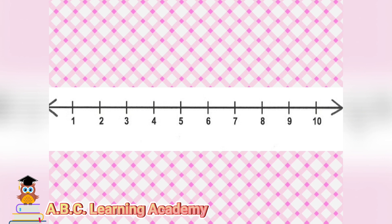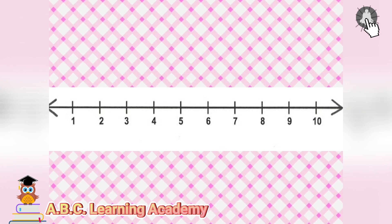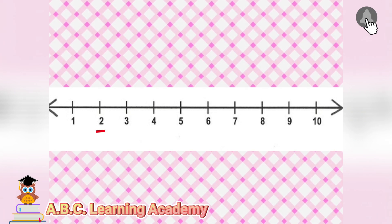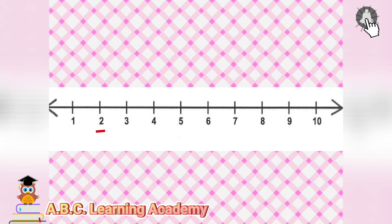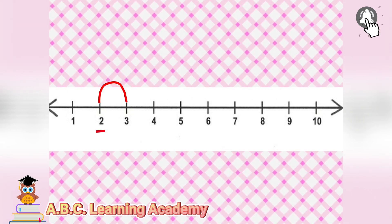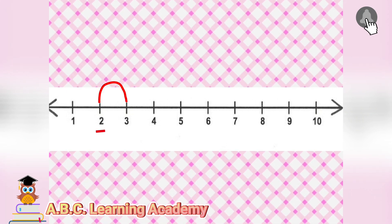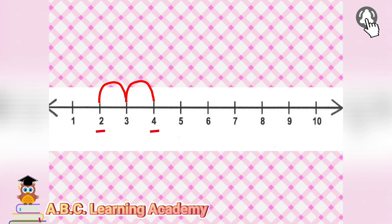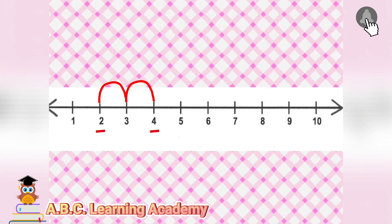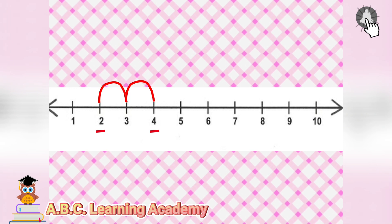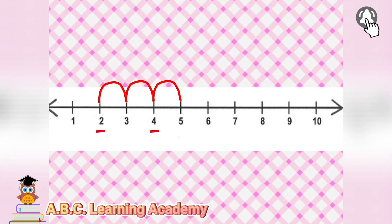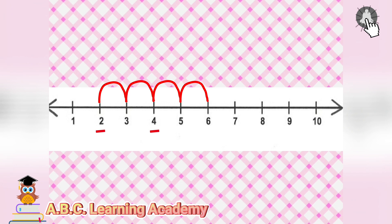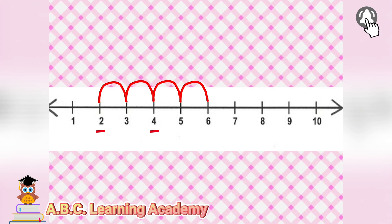Now let us use the number line. Let us start at number 2. We need to jump forward by twos. 1, 2 — so we reach number 4. Let us do again. 1, 2 — so we reach number 6.